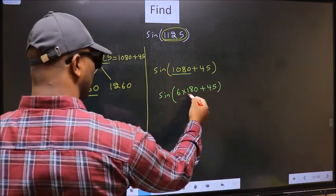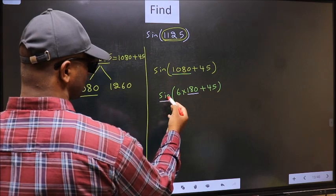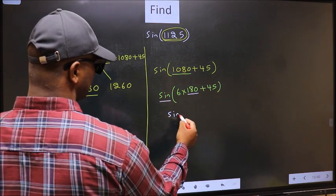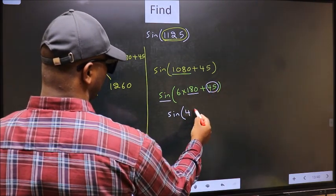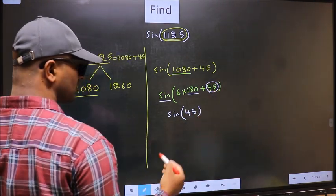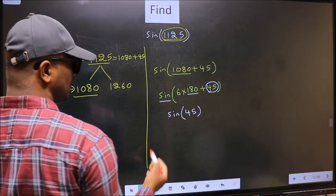Next, here we have 180, so sin is not going to change—it will remain sin, and inside we get this angle 45. Now the question is: will we get here plus or minus?